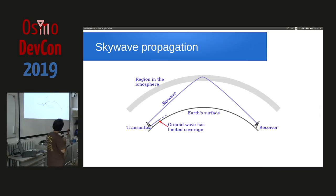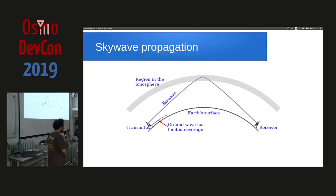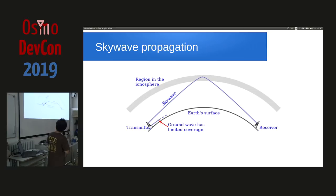This is an easier diagram to understand. If you want to reach a faraway place, you can use a sky wave instead of ground wave or line of sight, which is what we use at higher frequencies. In very low frequencies you use ground wave, where the Earth works as a waveguide to the signal. But in HF, we use sky wave propagation.